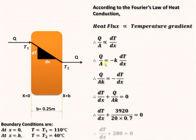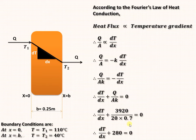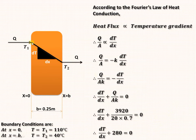Taking K to one side and transferring the negative term to the other side gives us: dT/dx + Q/(A·K) = 0. Substituting the value of Q calculated in the first step, and using the known area and thermal conductivity of the brick material, we get dT/dx + 280 = 0. Let us see how to solve this simple differential equation and how to plot the temperature distribution using MATLAB code.